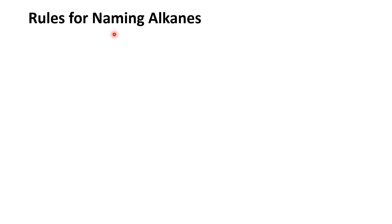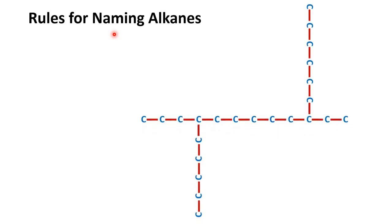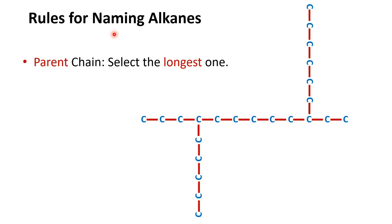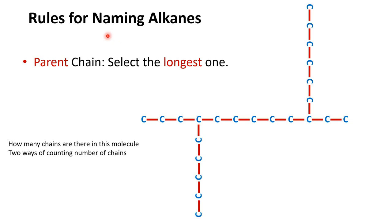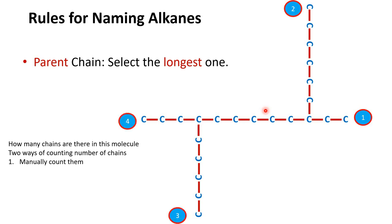Now let's learn the rules for naming acyclic alkanes — that is, saturated non-cyclic compounds. For the given compound, the first rule is to select the longest chain, which will be the parent chain. Before finding the longest chain, let me tell you how to count the maximum number of possible chains in a compound. There are two ways to count chains: manually counting them, or using a formula.